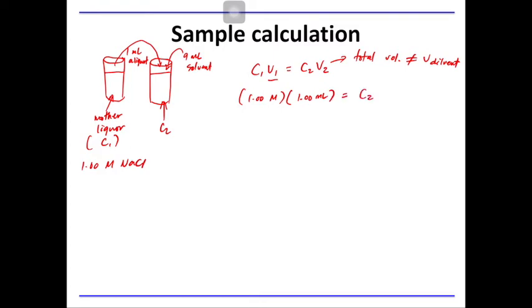C2 is something that we do not know, so just leave it at C2. And V2 is basically 10 ml. So C2 then is 1 molar times 1 ml over 10 ml. Hence, the new concentration of the diluted solution is then 0.100 molar.